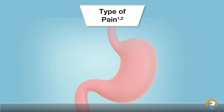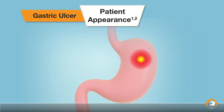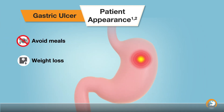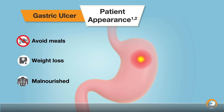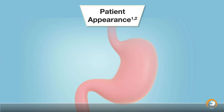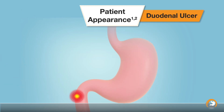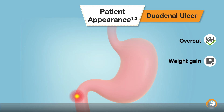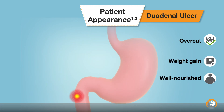As a result, patients with gastric ulcers tend to avoid meal intake and thus suffer from weight loss and appear malnourished. On the contrary, patients with duodenal ulcers tend to overeat, resulting in weight gain, and they tend to appear well-nourished.